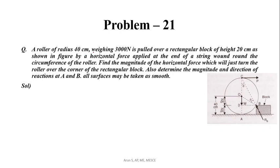A roller of radius 40 cm weighing 3000 N is pulled over a rectangular block of height 20 cm as shown in figure by a horizontal force applied at the end of a string wound around the circumference of the roller. Find the magnitude of the horizontal force which will just turn the roller over the corner of the rectangular block. Also determine the magnitude and direction of reactions at A and B. All surfaces may be taken as smooth.